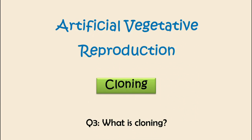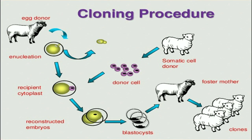The example of artificial vegetative reproduction is cloning. Through cloning, we can get a new individual with the same physical characteristics as the parent.